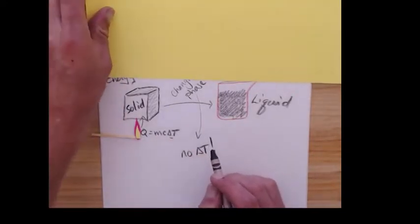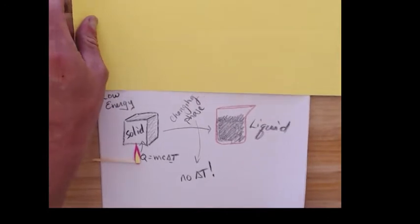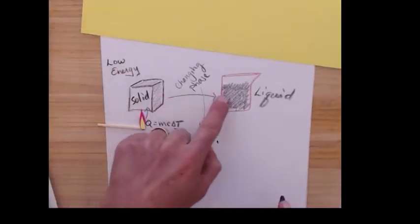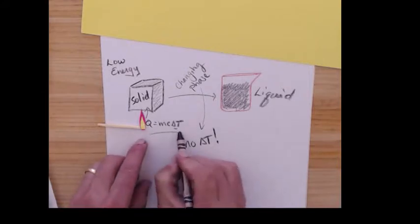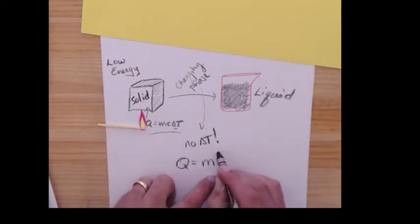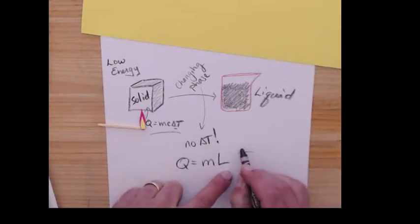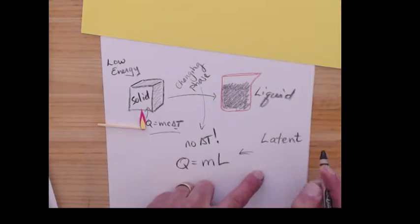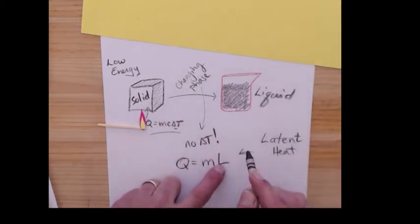The temperature isn't changing. The phase is changing. So now it's not Q equals MC delta T. It's Q equals M what's called the latent heat. Latent means you can't find it. And then the latent heat.